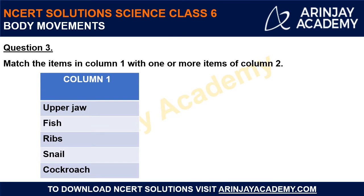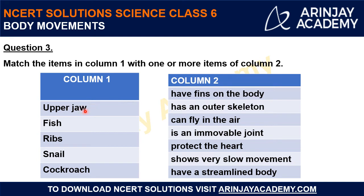Question 3: Match the items in column 1 with one or more items of column 2. It is possible that one item of column 1 matches with more than one item of column 2. Column 1 has: upper jaw, fish, ribs, snail, and cockroach.